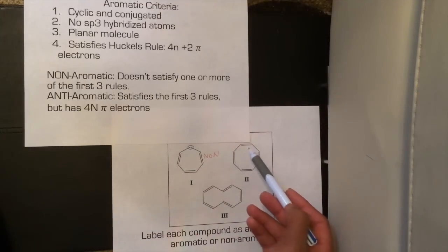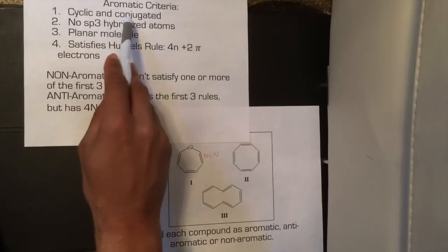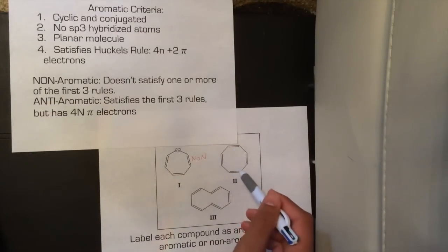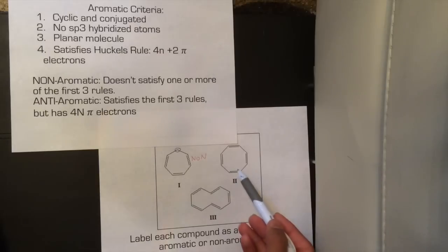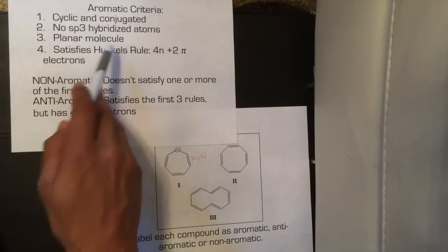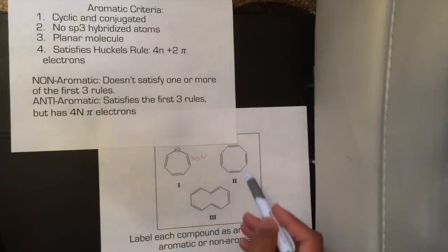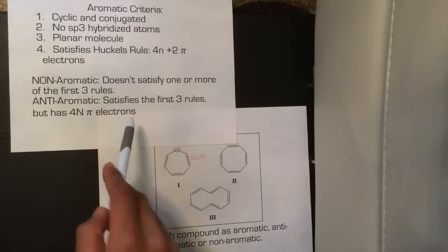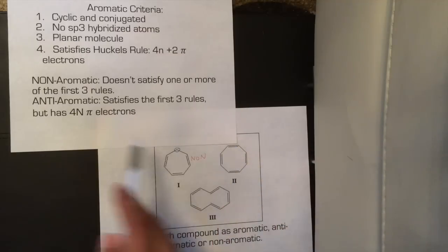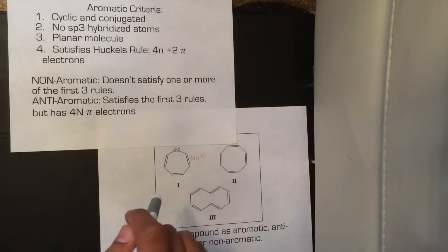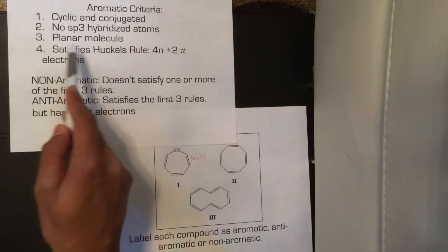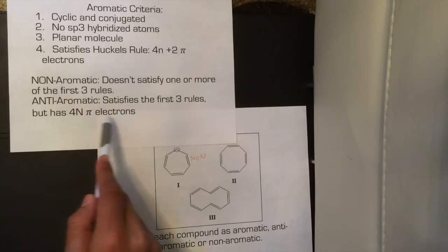The second compound is completely cyclical and conjugated — we have alternating double bonds all around the ring, and there are no sp3 hybridized atoms. However, it's not a planar molecule; this specific 8-membered ring is not planar. We can also see that it does satisfy the 4n pi electron rule — it has 8 pi electrons. So can we say it is anti-aromatic or non-aromatic? It's not planar, so it doesn't satisfy one of the first three rules, but it also does not satisfy the 4n pi electron rule.